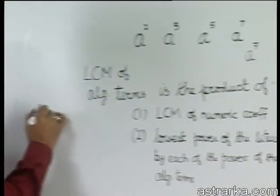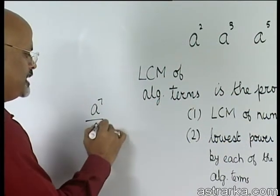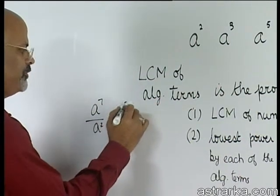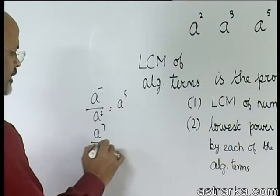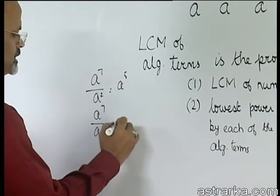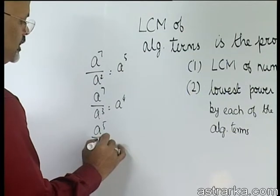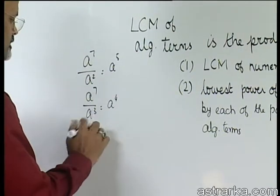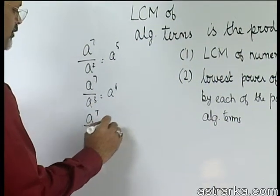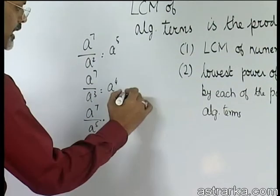So, A power 7 by A square is A power 5, A power 7 by A cube is A 4, A power 7 by A power 5 is A square.